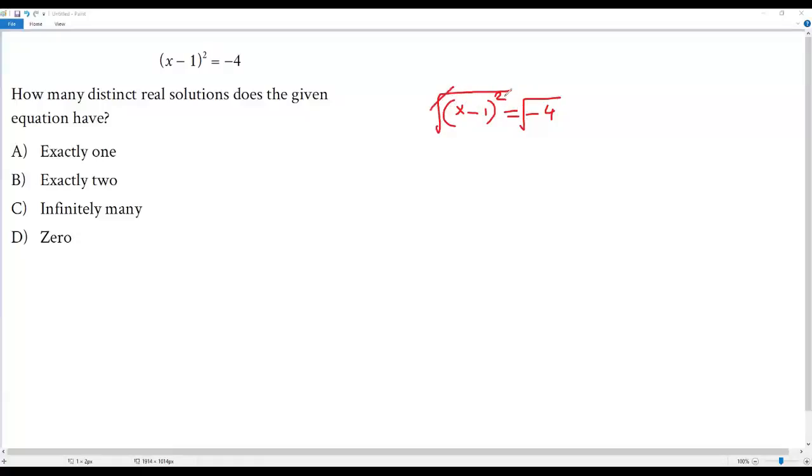When I take square root on both sides, the square root and the square will cancel out and I'm just getting x - 1 = √(-4).